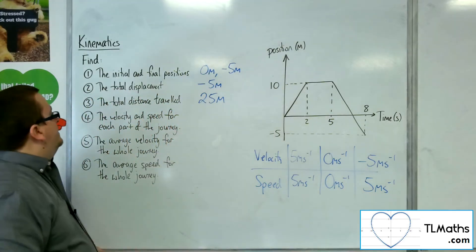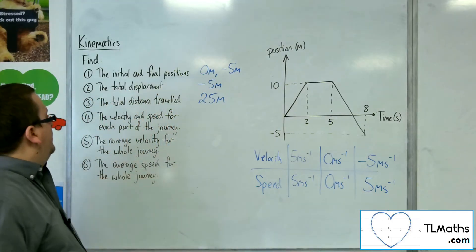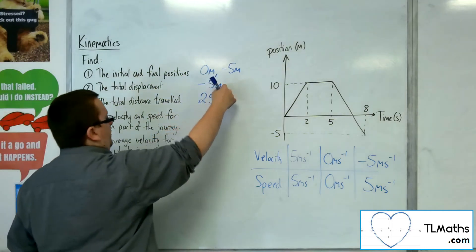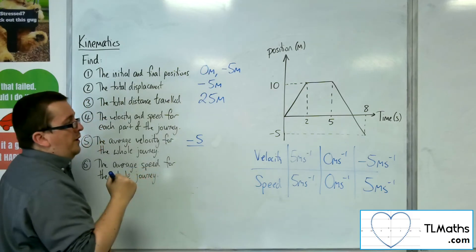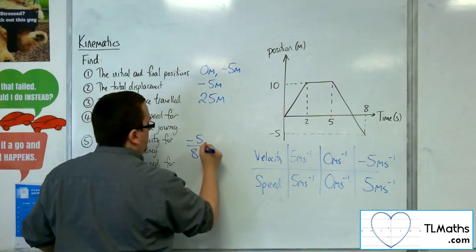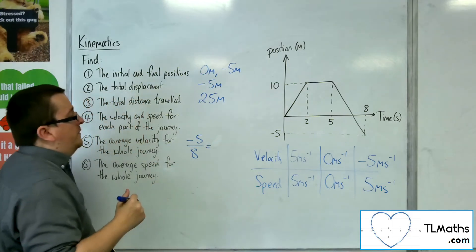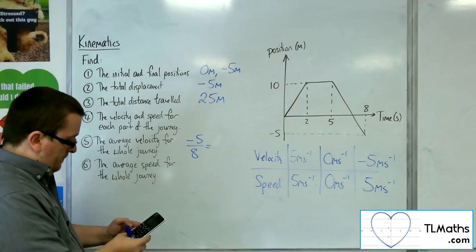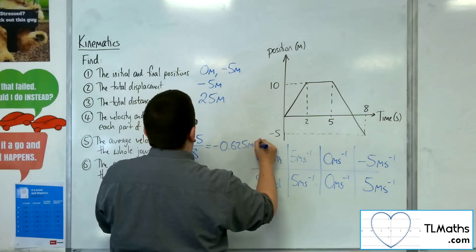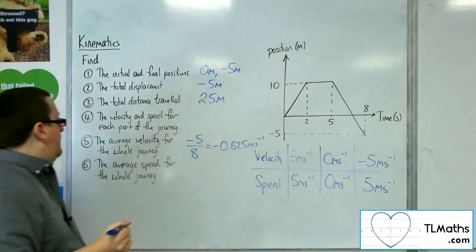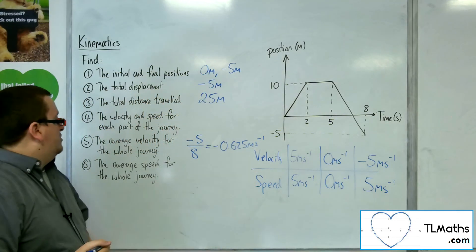Now, the average velocity will be the total displacement, minus 5, divided by the total time, which is 8. So minus 5 divided by 8 gets us minus 0.625 metres per second. That's the average velocity.